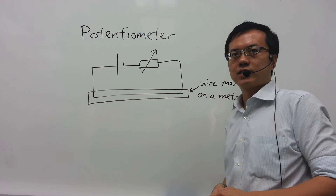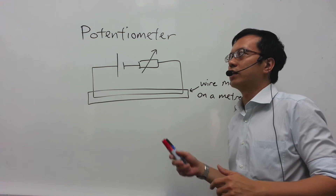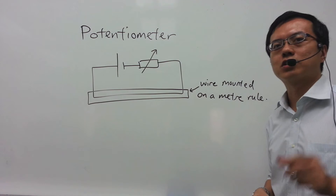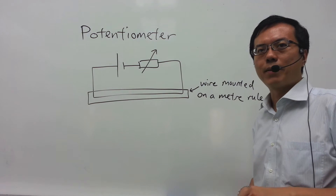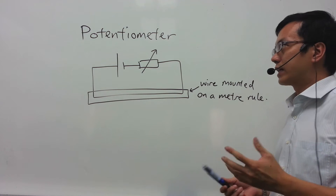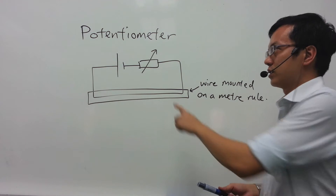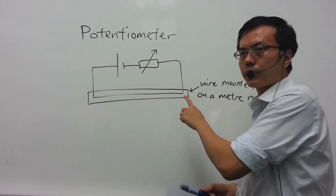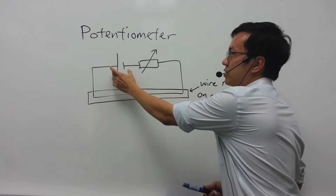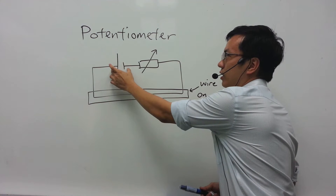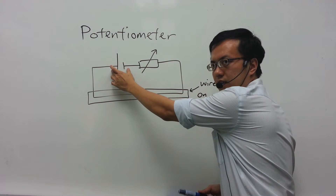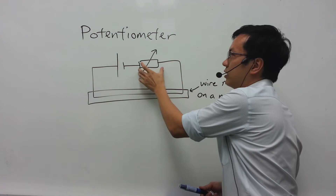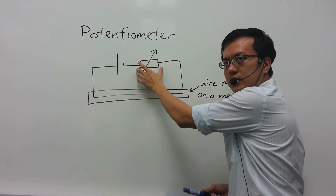The potentiometer is an electric circuit that is used to measure small amounts of EMF. What it consists of is a primary circuit such as this, which consists of a cell and a variable resistor.